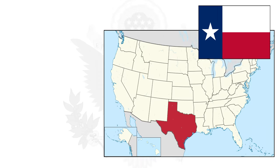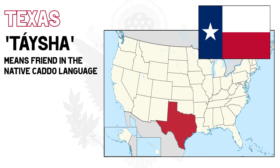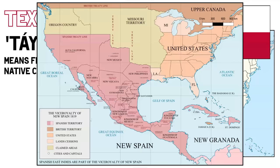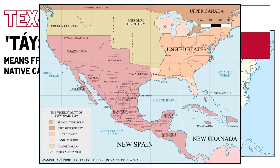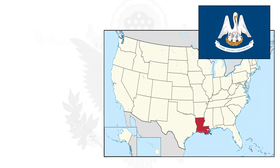Moving on to the biggest state of the Continental 48: Texas. Texas's name origin is in the word Taisha, which means 'friend' in the native Kado language. Oddly enough, during Spanish colonial rule in the 18th century, the area was briefly known as New Philippines, given that the Asian country was at the time also a Spanish colony. How weird would it be if that had stuck around and Texas was now called New Philippines?